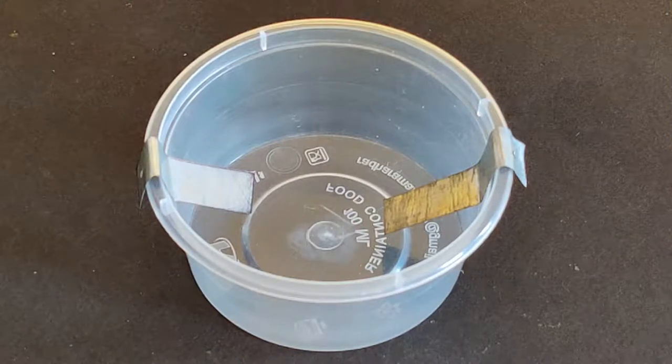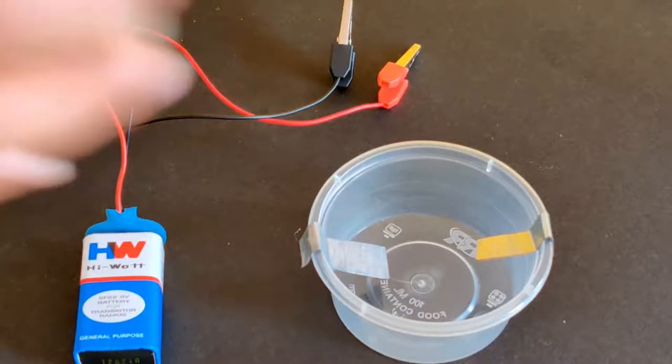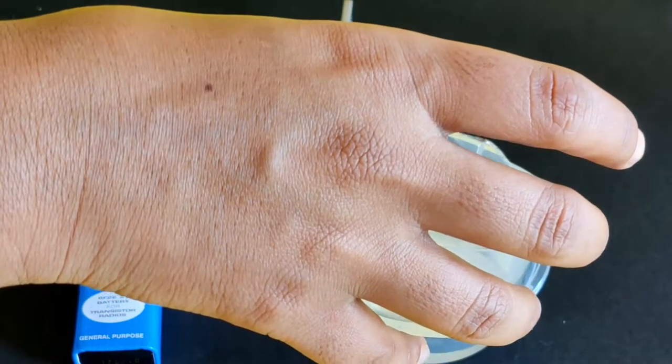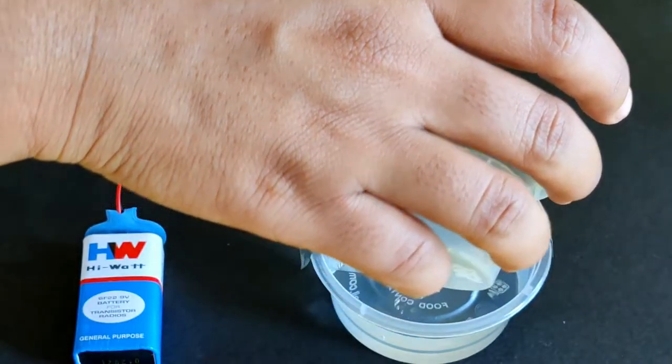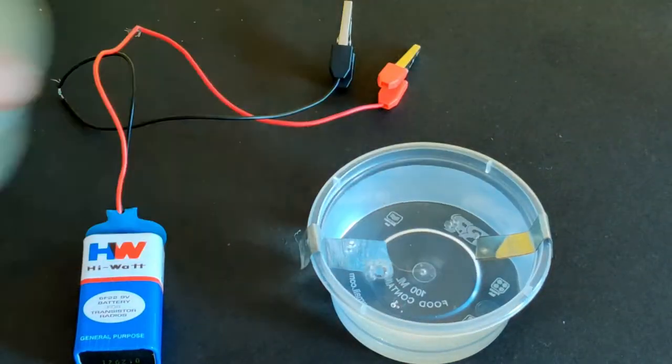Bend the zinc strips and fix them to the rim of the plastic cup. Add enough water to the cup such that the ends of the zinc strips are immersed in the water.